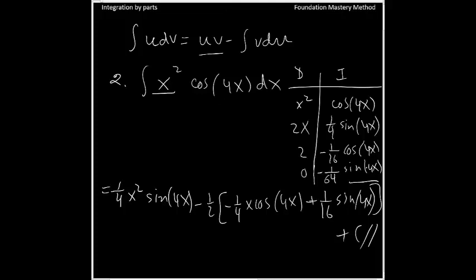See that we have done with the tabular method. Now the next part is the plus sign, minus sign, plus sign, and ignore 0. Now first you multiply this one here, then this one, then this one.